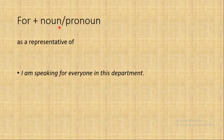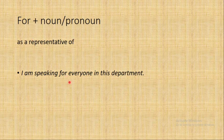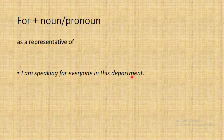'For' plus a noun or pronoun can also mean 'as a representative of' — speaking on behalf of someone. 'I'm speaking for everyone in this department' — I am speaking on behalf of everyone. So 'for' here means representing or acting in the name of a group.